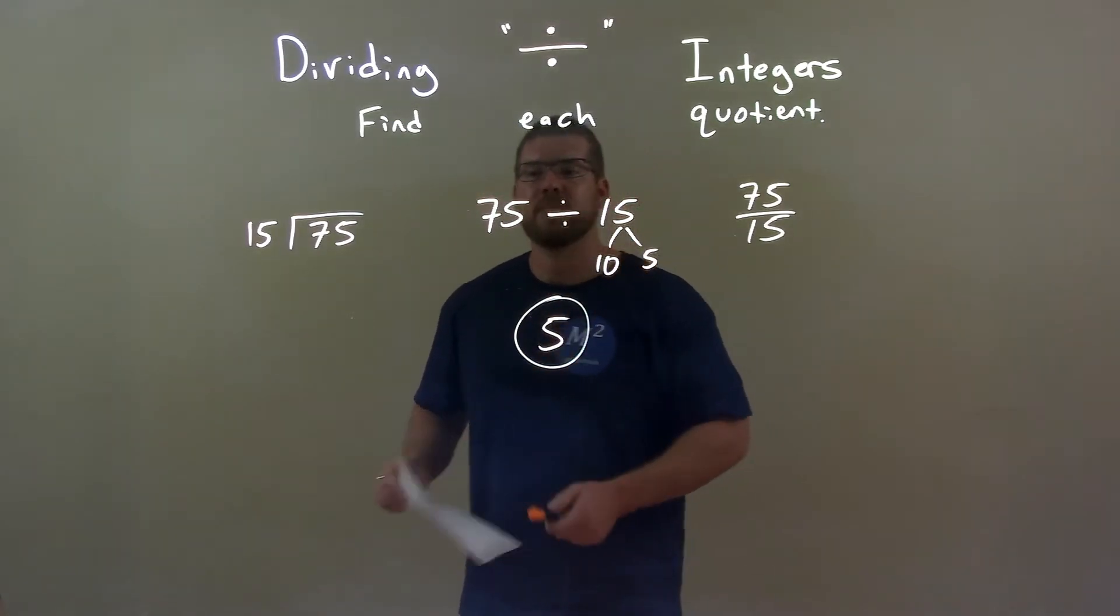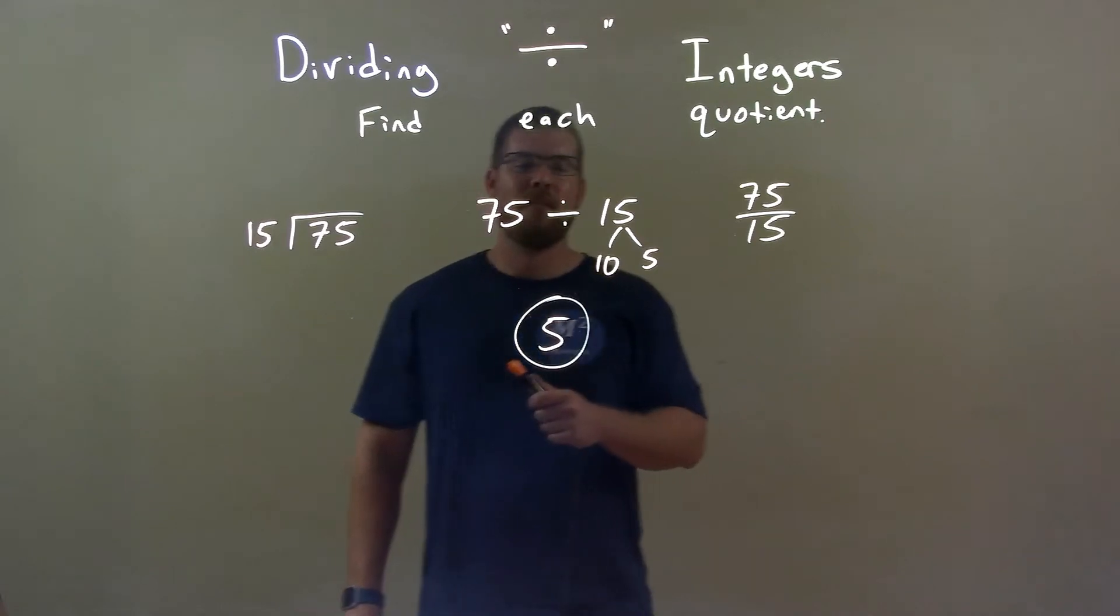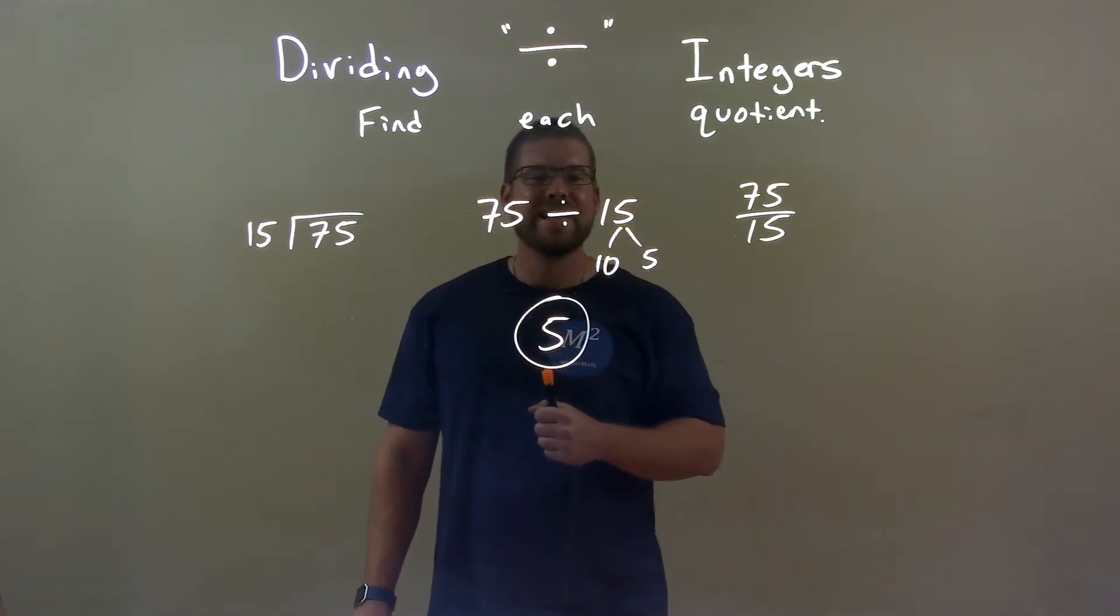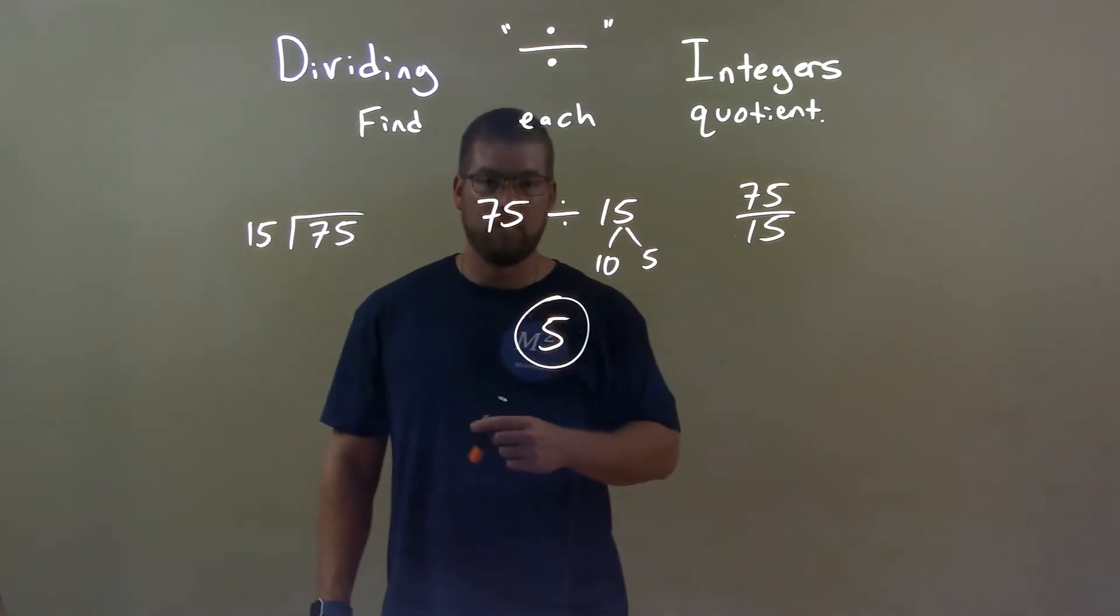So, quick recap. We're given 75 divided by 15. Well, we know 15 goes into 75 five times, and a positive divided by a positive is a positive. So our final answer is positive 5.